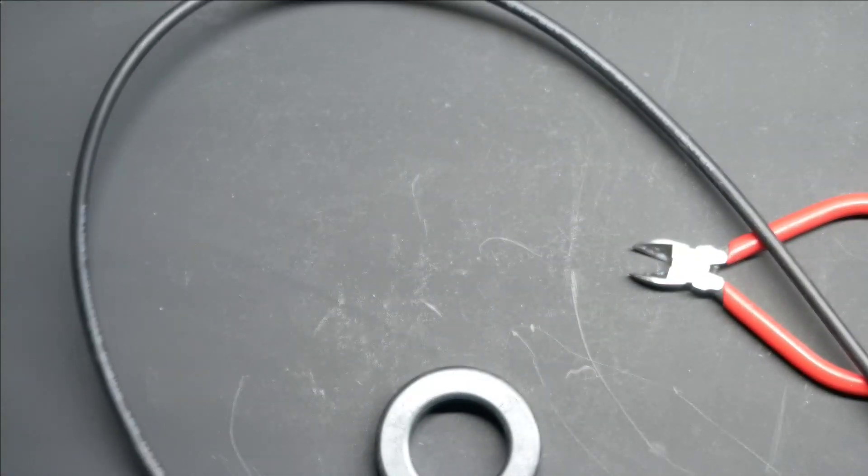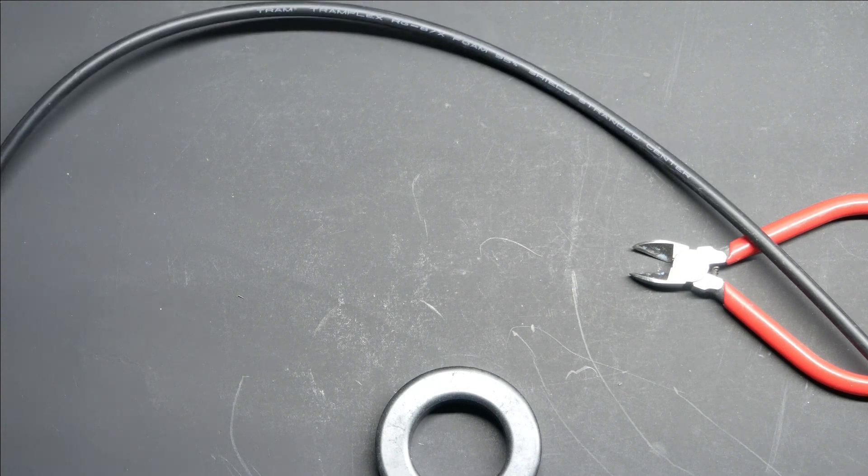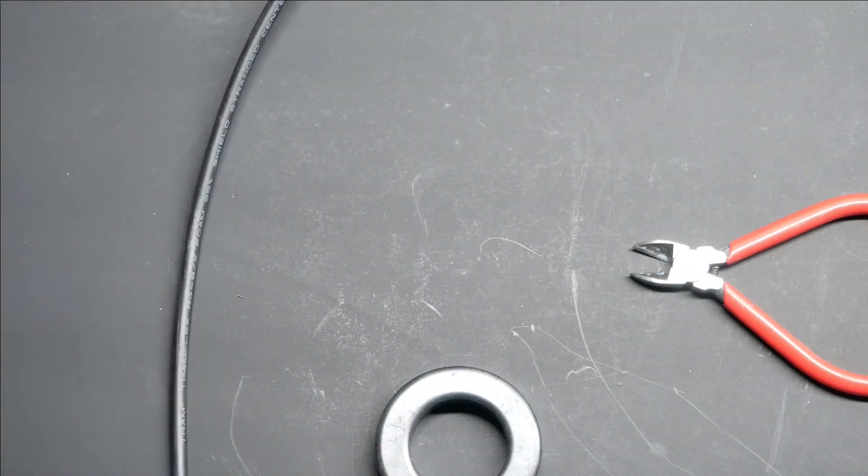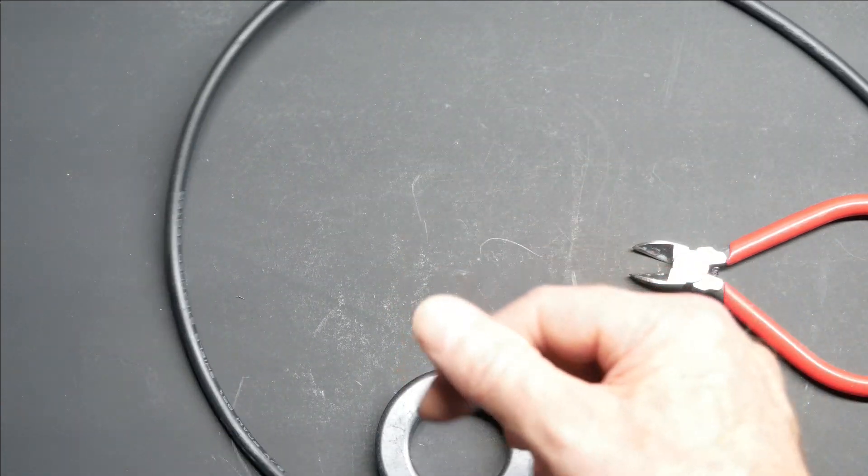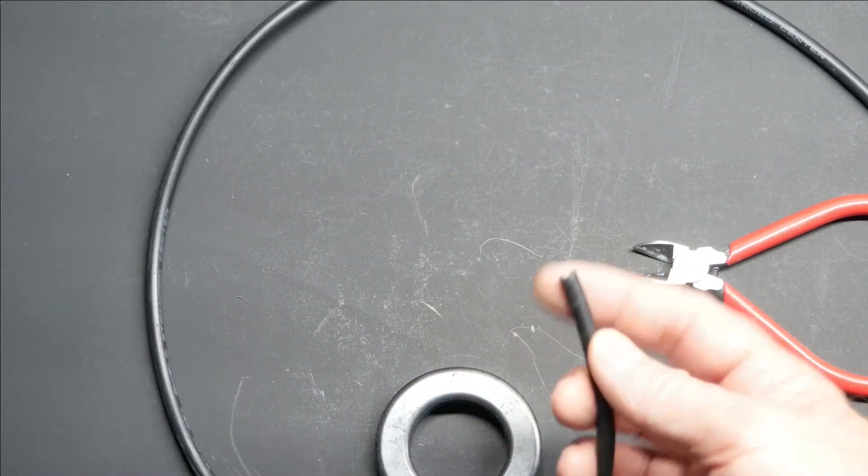This would be better with RG58, which would be a little smaller. However, this slightly bigger coax will fit the toroid and it actually will hold a little bit more power as well.